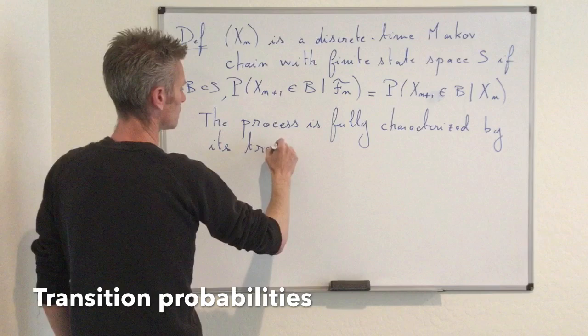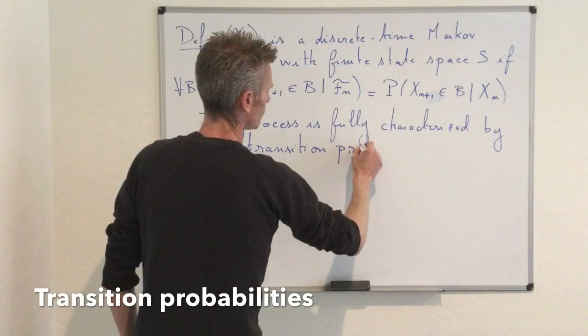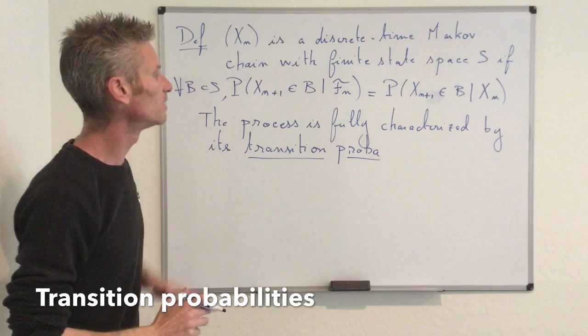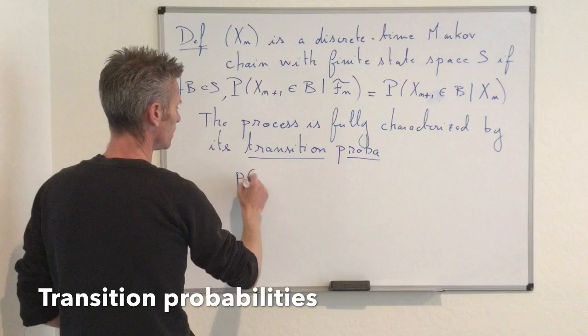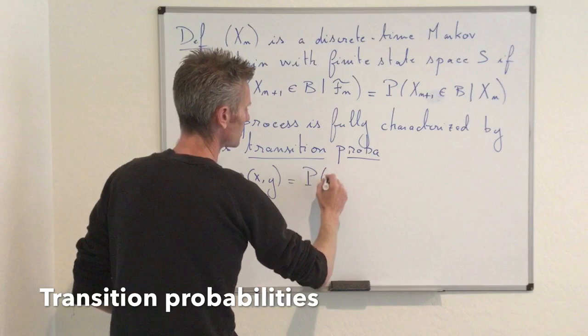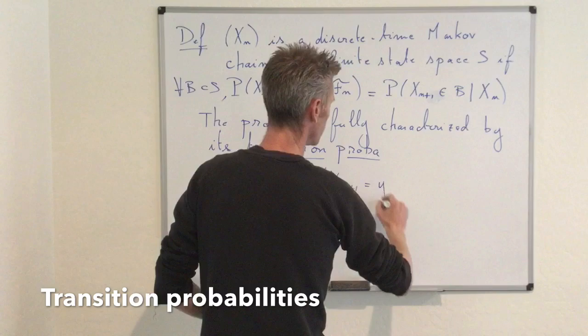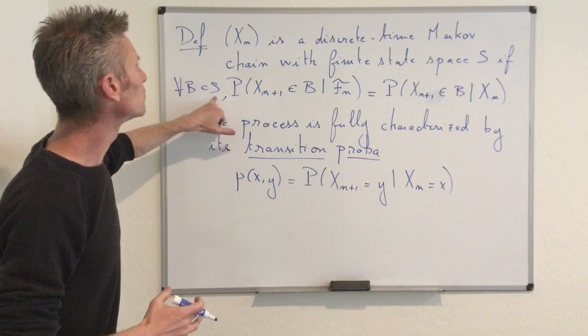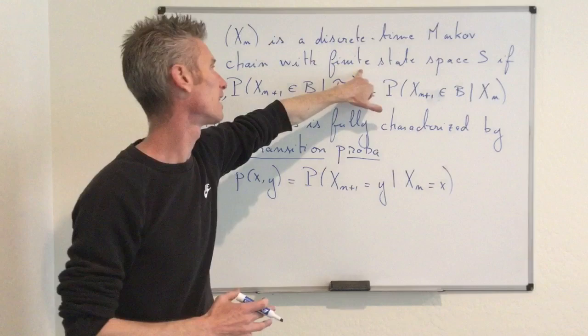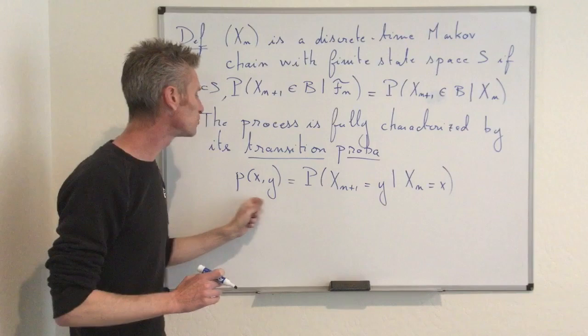The transition probabilities are defined as the probability that the process goes from a state to another one — say from x to y in one time step. We call those p(x, y). By definition, this is the probability that the process at time n+1 is in state y, given that at the previous time step it was in state x. You can define those quantities for all x and y in the state space, and because the state space is finite or countable, it's enough to know those transitions to have a full characterization of the process.